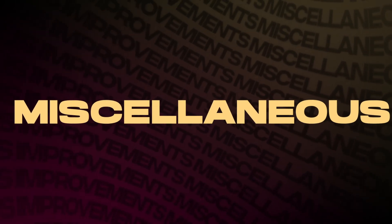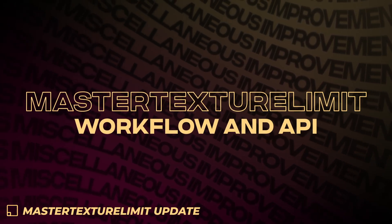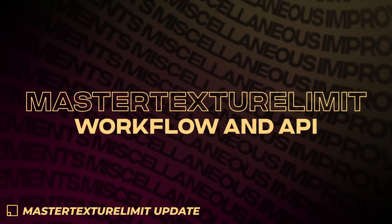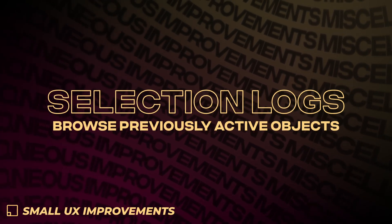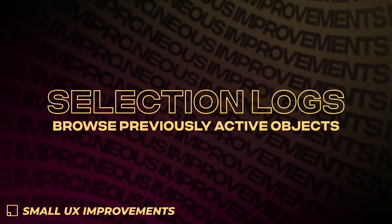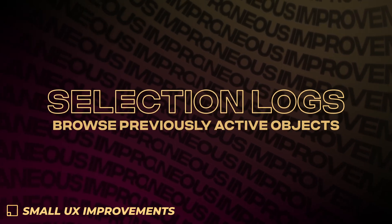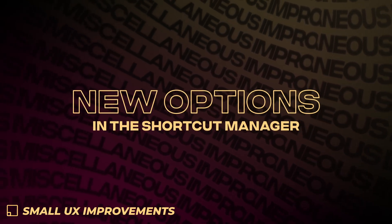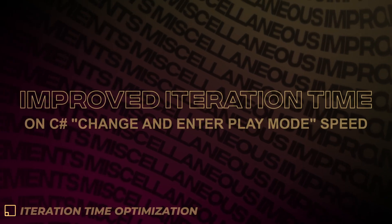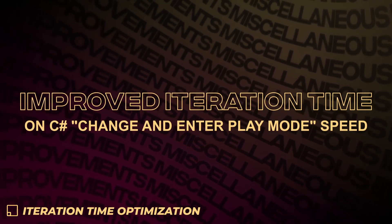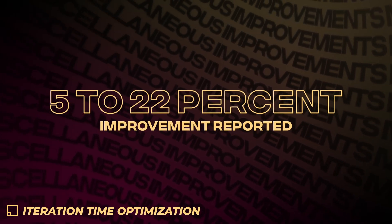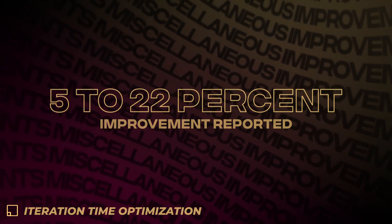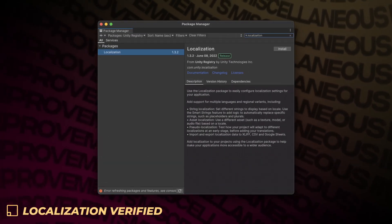Before wrapping up, here are a few miscellaneous improvements. You can now use the Master Texture Limit workflow and API for fine-grain control over the runtime quality settings of each of your textures. Unity has also added a ton of small UX improvements like selection logs that will enable you to easily go back through previously active objects, or new options in the shortcut manager. They've also improved iteration time, especially on C# script change and enter play mode speed, reporting a 5 to 22% improvement depending on project size. The localization package is now finally verified.